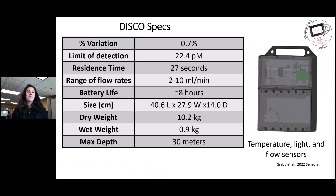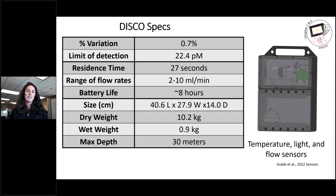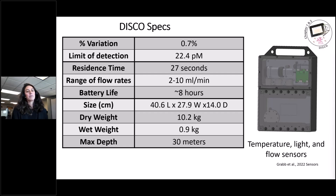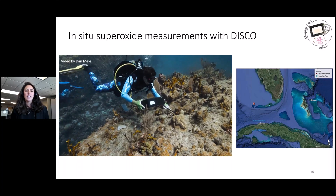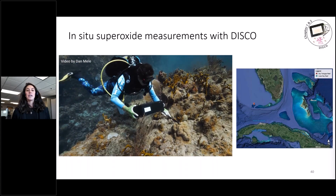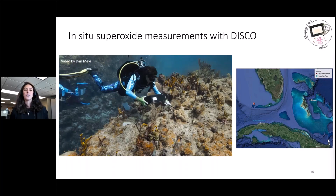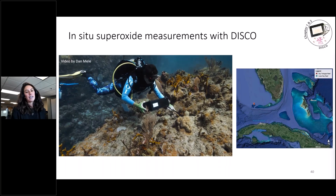These parameters shown on screen are the result of benchtop testing. We were able to create DISCO so that it has a limit of detection lower than target values, with flow rates and residence times optimized for these environments, and is a convenient size for diving. We also collect metadata with our sampling conditions to apply to the data later. I was fortunate to collect data across a range of environments — superoxide concentrations associated with coral in Cuba, in the USVI, as well as the Florida Reef Tract. Today I'll share the data from the Florida Keys.